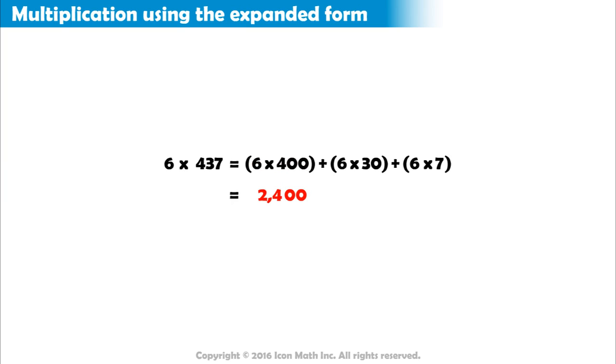Now, multiplying 6 by 30 is 180. And multiplying 6 by 7 is 42.